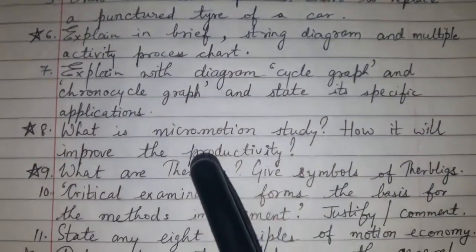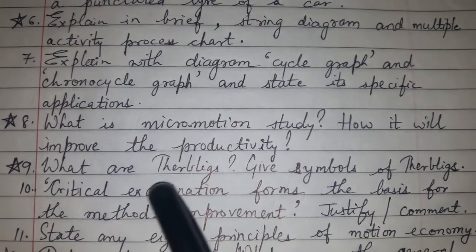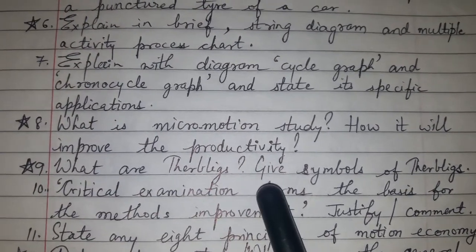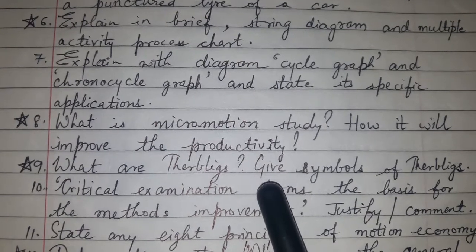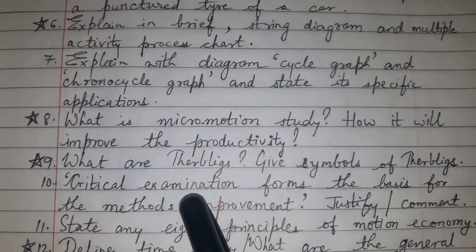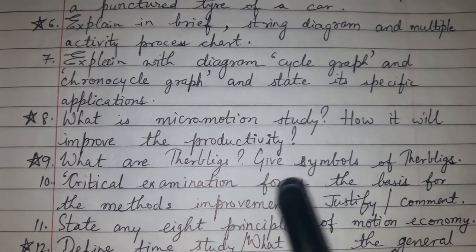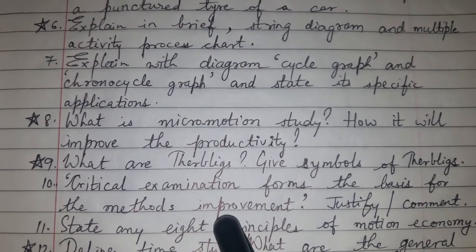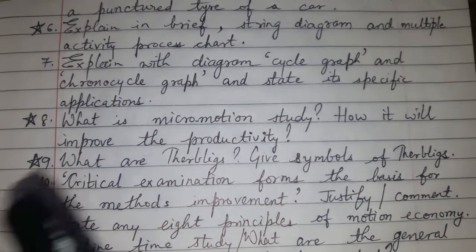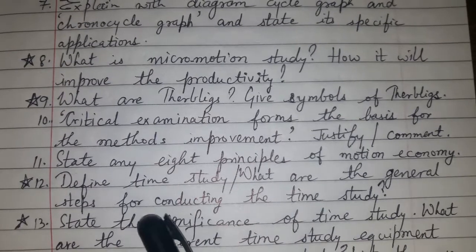Question 8: What is micro motion study? How will it improve productivity? Question 9: What are therbligs? Give the symbols of therbligs. Question 10: Critical examination forms the basis for method improvement — justify or comment.